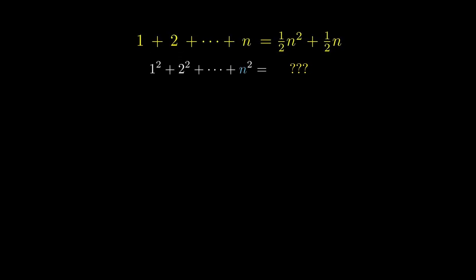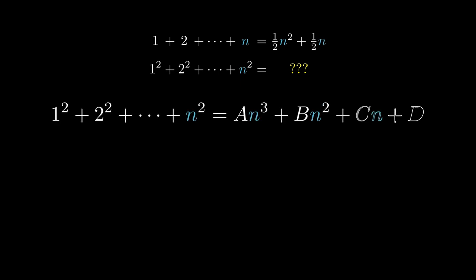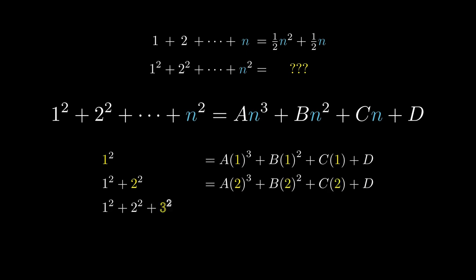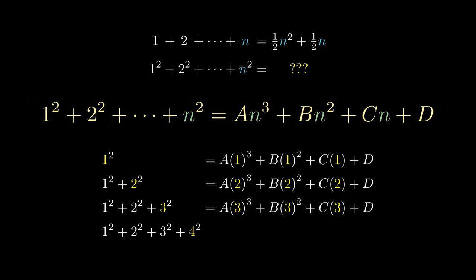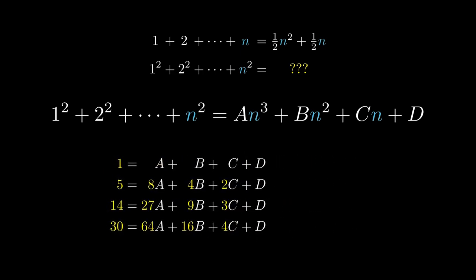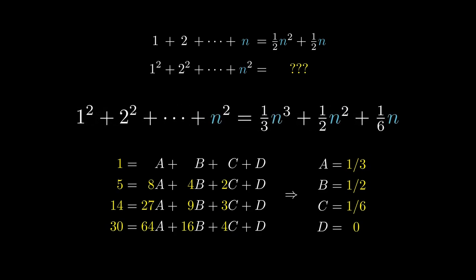We can take our cues from the formula for the sum of numbers. Since we added up numbers to obtain a power of 2, by adding up squares we probably would obtain a power of 3. For this formula to work, it had better work with the sum of the first square — we substitute n equals 1. Calculating the sum of the first 2 squares, we substitute n equals 2. Likewise for the sum of 3 squares, we substitute n equals 3. And for 4 squares, we substitute n equals 4. It's not too difficult to calculate these numbers and apply equation-solving techniques to obtain a equaling 1 third, b equaling one half, c equaling 1 over 6, and d equaling 0.